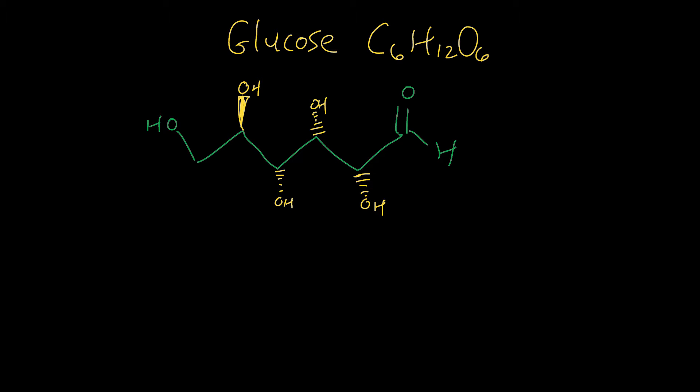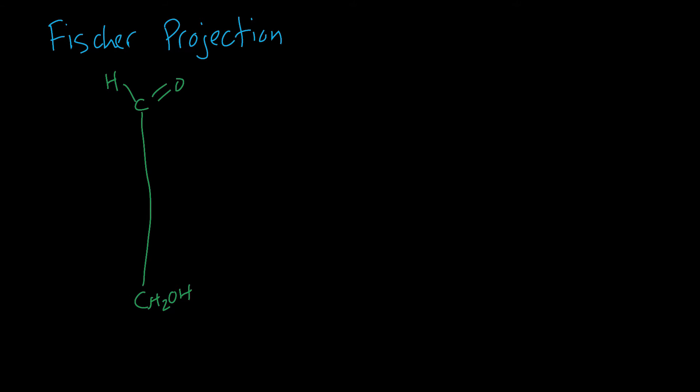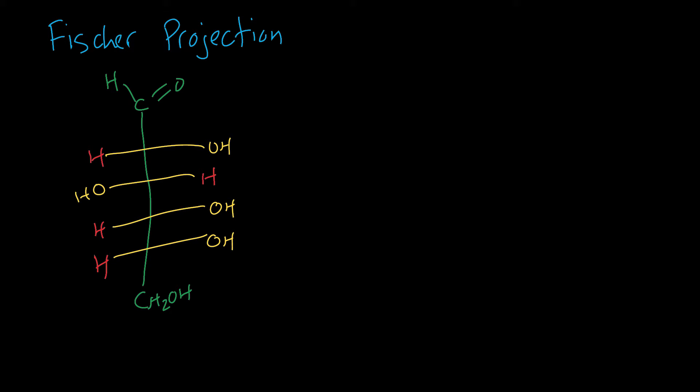This open chain form can be expressed also as a Fischer projection, which is just a way to simply draw in an organized fashion all your chiral centers, which are bracketed on the top by an aldehyde group and on the bottom by a CH2OH group. Those four chiral carbons can either have the OH on the right or the left. This specific arrangement is conducive to glucose. When you see first an OH on the right, then an OH on the left, then two OHs on the right, that means you have glucose. If that were arranged differently, then you would have a different monosaccharide.